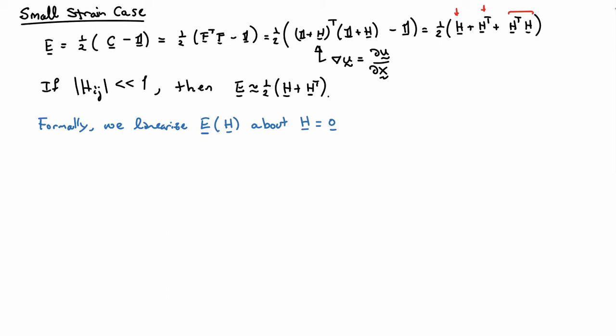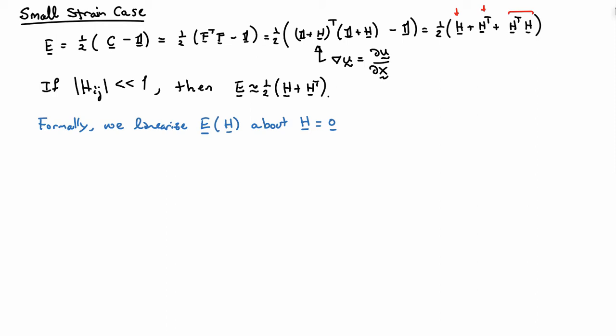In a formal sense, what we've done is linearized the expression for the Green strain about the point where the displacement gradients are equal to zero. If we want to look at this more formally, we think about linearizing a function. If we have any function f of y, its linearization about any point y-naught is given by the point-slope form for a line—which is just the first two terms of the Taylor series.